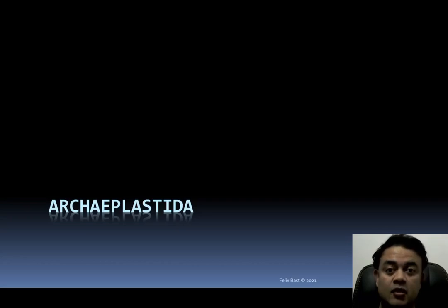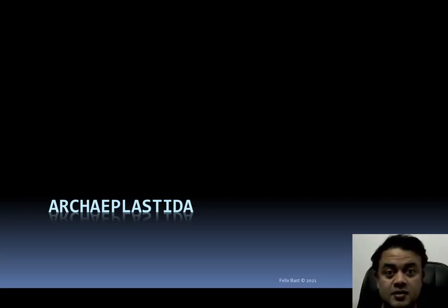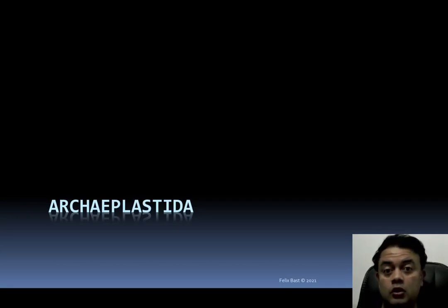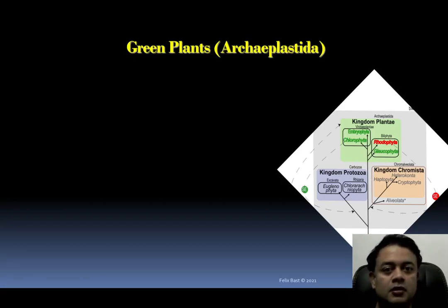Archaeplastida — what is this all about? As the name suggests, 'archae' means old and 'plastida' refers to organisms with plastids. So the name indicates this is a group of organisms with very old or ancient plastids. Archaeplastida is essentially the green plants with chlorophyll not masked by any accessory pigments, which is why they appear green.